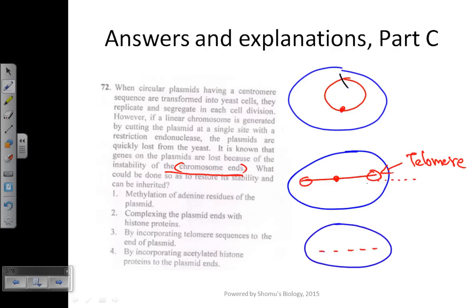The third option is incorporating telomere sequences to the ends of the plasmid. Yes, we find this very applicable because if we add telomere sequences at the ends, they will prevent exonuclease enzymes from breaking down the chromosome from the ends.